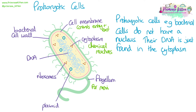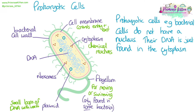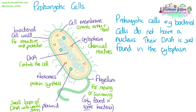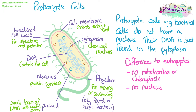The flagellum — only some bacteria have this — is used for moving around or swimming. Plasmids are small extra loops of DNA that often contain useful genes, like antibiotic resistance. The bacterial cell wall is for structure but also for protection. When comparing prokaryotic and eukaryotic cells, the main two differences are that there are no mitochondria or chloroplasts in prokaryotic cells, and there is no nucleus. One similarity with plant cells is a cell wall, but it's not made of cellulose, so there is still a difference.